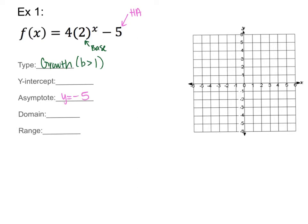The horizontal asymptote produces a horizontal line, so I like to draw it with a dashed line since it's technically an invisible line. I'll draw the dashed line at y = −5 and label it. Now let's build a table to plot points. I'll choose x values of 0, 1, and 2 — small simple numbers — just like we did in the bell work.